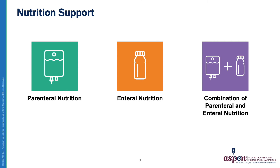Nutrition support is usually in the forms of two entities, which we all know very well: parenteral nutrition and enteral nutrition, or a combination of both. Most pediatric intestinal failure patients are on TPN, but the majority receive combination therapy. Over time, the TPN is gradually reduced and the child is subsequently maintained on nutrition via enteral therapy.